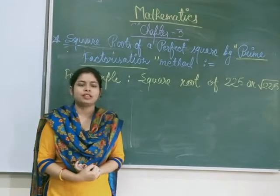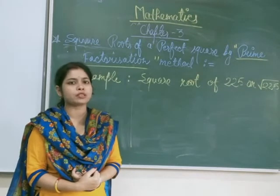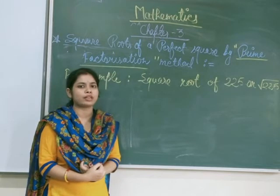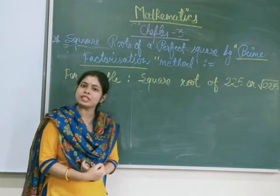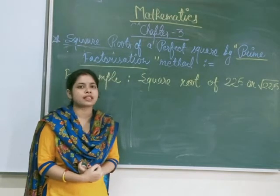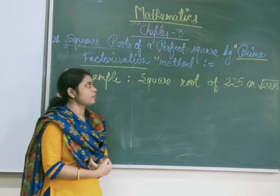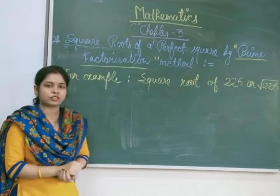Now, let us discuss methods for finding the square root of any number. So there are basically 2 methods for finding the square root. First one is prime factorization method and second one is long division method. So, at first we are going to discuss prime factorization method.